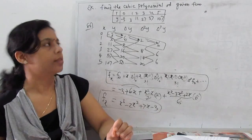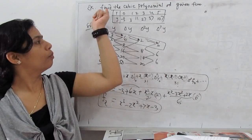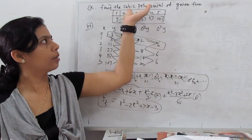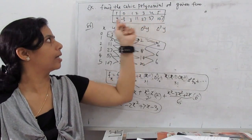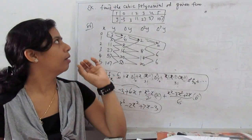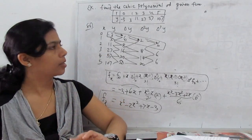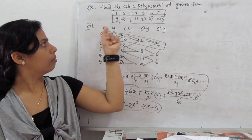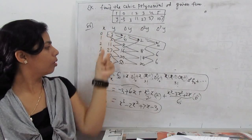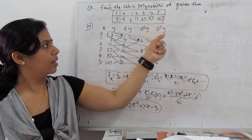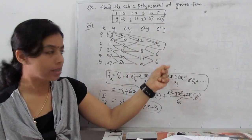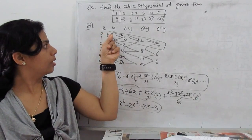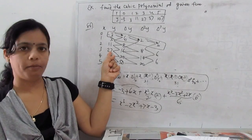Now let's look at an example using Newton's forward difference formula: find the cubic polynomial for the given function. We have x values 0, 1, 2, 3, 4 and corresponding y values. We construct the forward difference table with columns for y, Δy, Δ²y, and Δ³y. We can see that Δ³y is constant and all further entries go to zero — confirming it is a cubic polynomial. We calculate differences: this minus this, and so on.